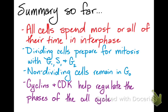Those cyclins and CDKs — the cyclin-dependent kinases — help regulate the cell through the cell cycle checkpoints. The building up of active CDK is what helps the cell move into mitosis and complete cell division.